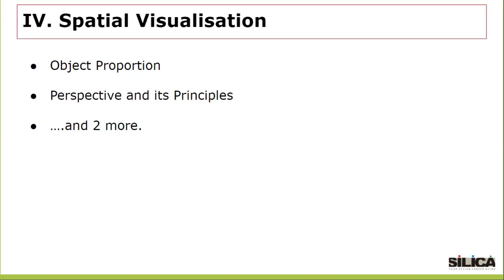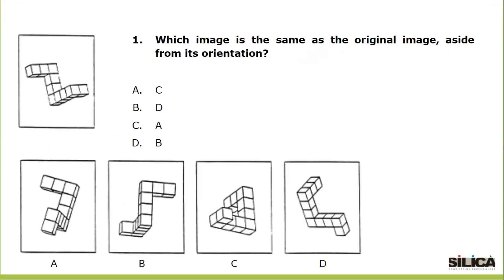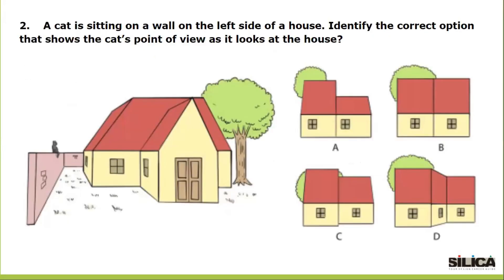Spatial visualization could be summed up into four topics: object proportion, perspective and its principles, and two more. Through such questions, a mental rotation test could be done to analyse if you can rotate a 3D object mentally to visualize its form from all sides. For example, a perspective-based question: there's a cat on a parapet next to a house — you have to perceive the house through the cat's eye level and mark an answer as per what the cat would view. Again, it's an analysis of visualization.